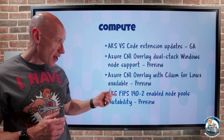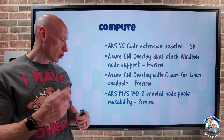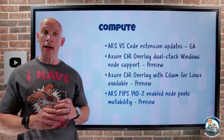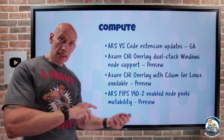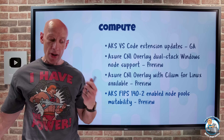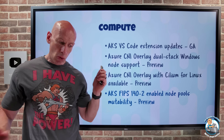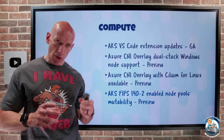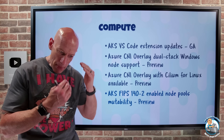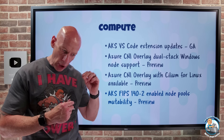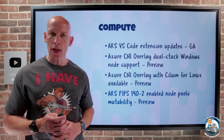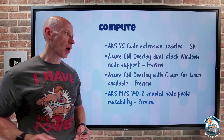In AKS, the FIPS 140-2 enabled node pools now have mutability, which means I can enable or disable it. When I change that, it will do a re-image of the node pool. The FIPS 140-2 is the government standard that defines minimum security requirements for cryptographic modules. So I can now change an existing node pool based on my requirements.